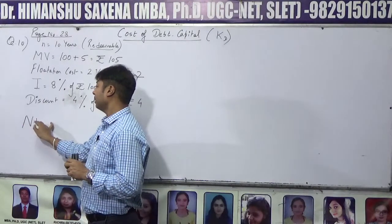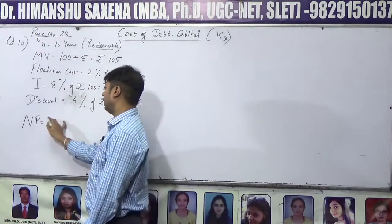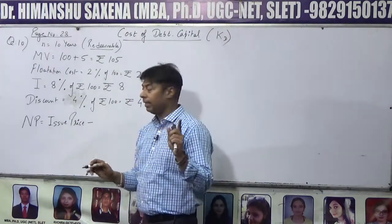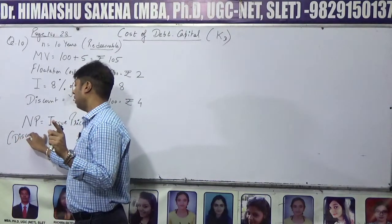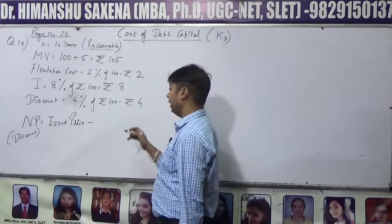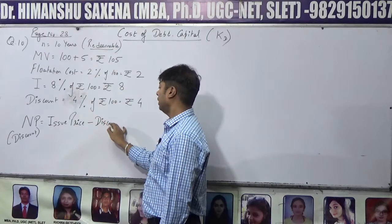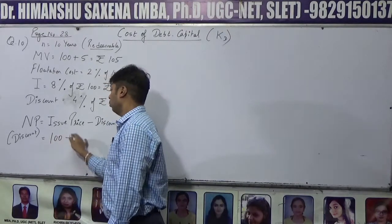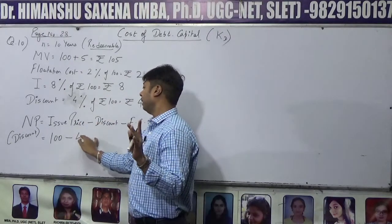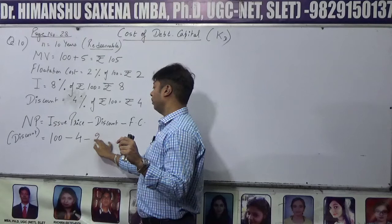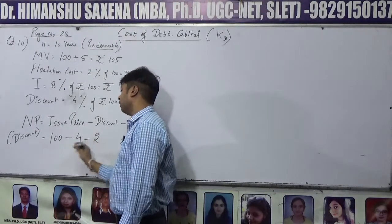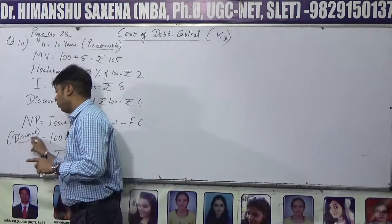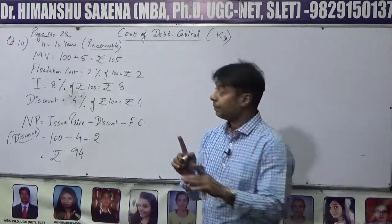Net proceeds का formula है: Issue price minus discount minus flotation cost. Issue price ₹100 थी, उसमें 4% discount था यानी ₹4, और flotation cost 2% यानी ₹2. तो ₹100 − ₹4 − ₹2 = ₹94. Net proceeds = ₹94.